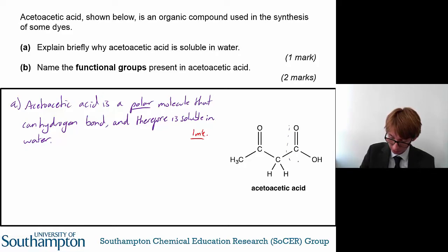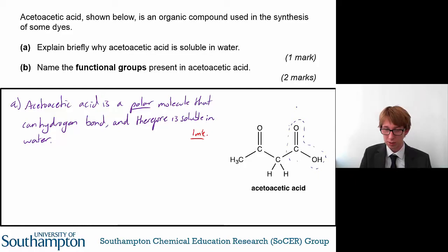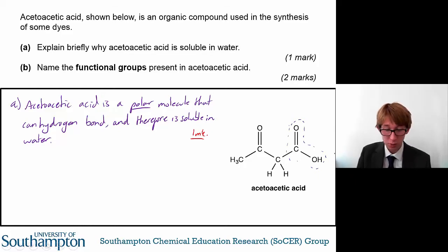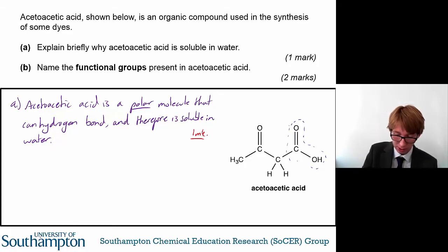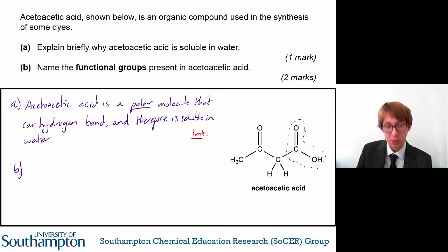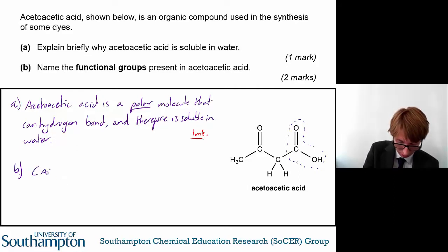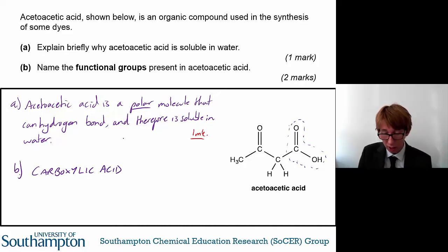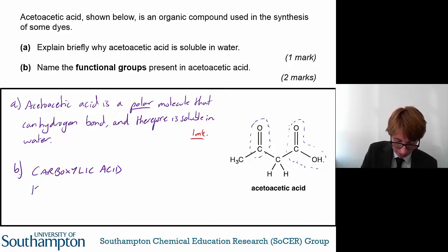This group here is what contributes to the hydrogen bonding. You can draw hydrogen bonding structures as you may have seen before. Part B for two marks asks you to name the functional groups present in acetoacetic acid. The fact that there are two marks suggests quite strongly that there are two functional groups. One is the carboxylic acid group, and the other functional group present is a ketone.